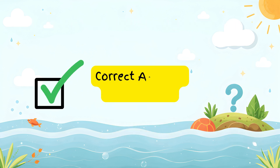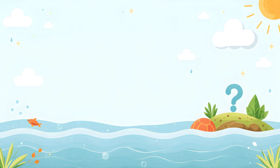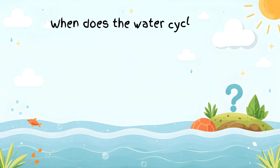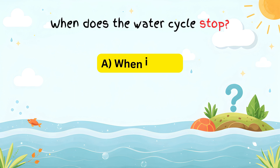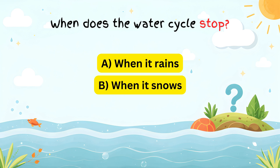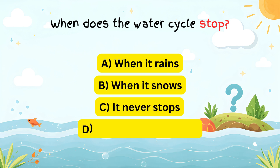Correct answer: collection. The water cycle is a continuous process that never stops, ensuring water is always moving. When does the water cycle stop? A) When it rains. B) When it snows. C) It never stops. D) When water is frozen.